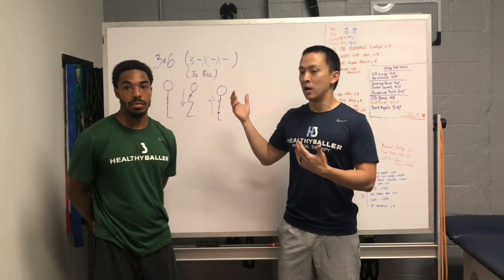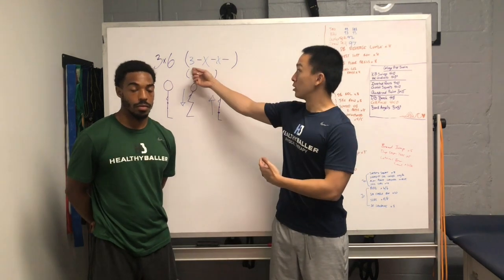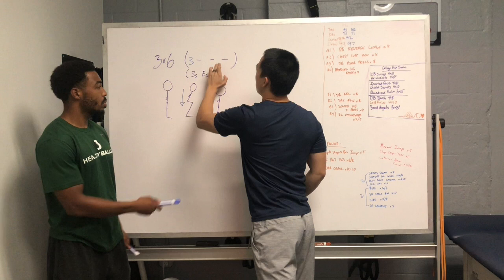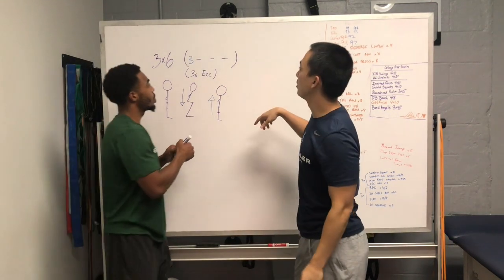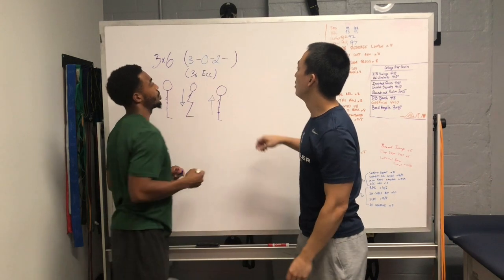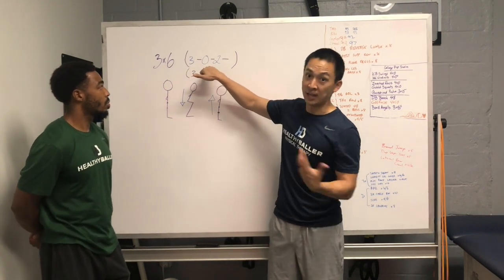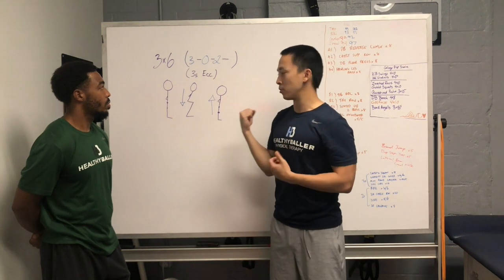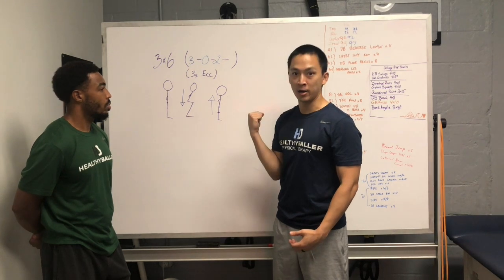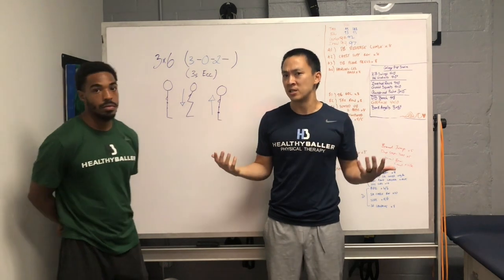For a practical example — let's use a bicep curl. Using the notation he wrote earlier, we'll go three for the eccentric, zero for the isometric hold, and two for the concentric. So for a bicep curl: on the way down, one-two-three, no hold, then one-two back up. These three numbers are very simple to write, and once athletes understand the basic principles behind it, it's easy for anyone.